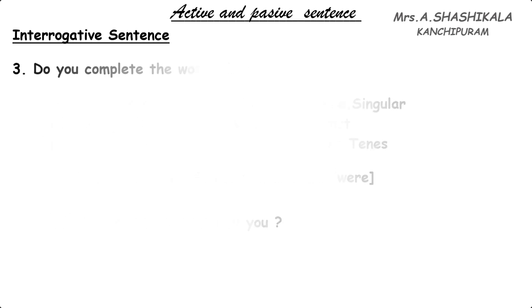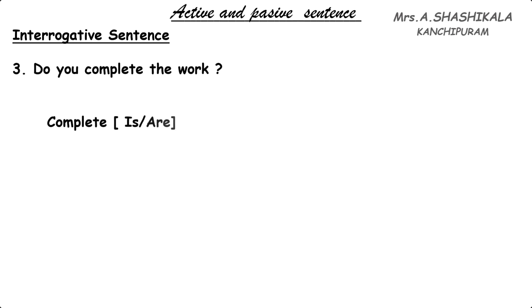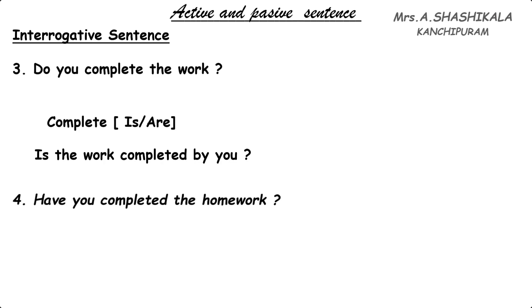For do-form questions: 'Do you complete the work?' Here 'do' plus 'complete' is present tense, so we use the be-form 'is' or 'are'. 'The work' is singular, so we use 'is'. The answer is: 'Is the work completed by you?' Another example: 'Have you completed the homework?' The passive is: 'Has the homework been completed by you?'